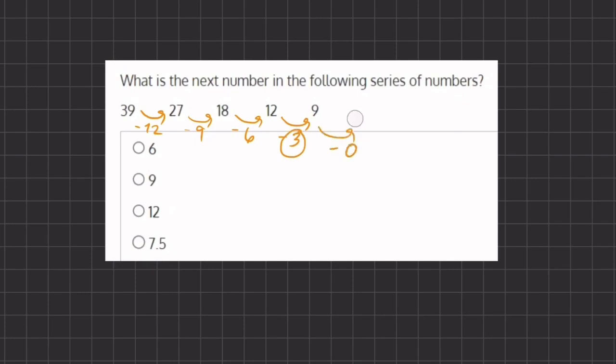Therefore, if we carry out this transition, we have 9 minus 0, which gives us 9. So 9 will be the next number in our series. Therefore, 4 will be our final answer.